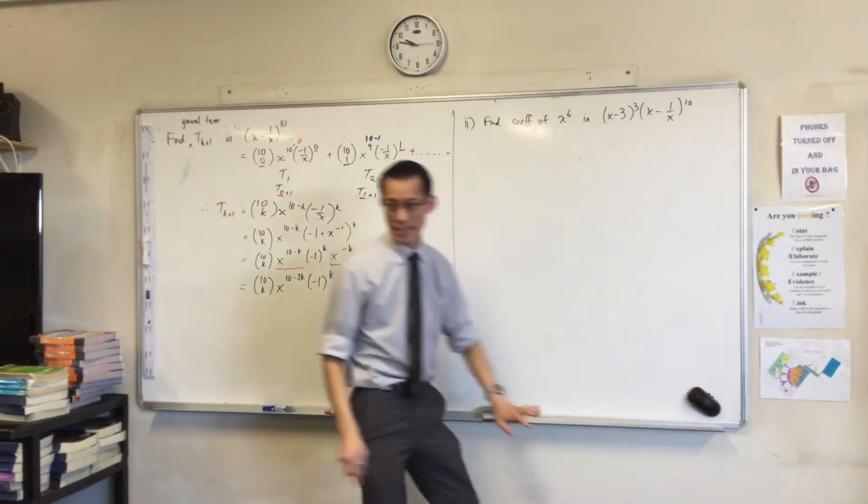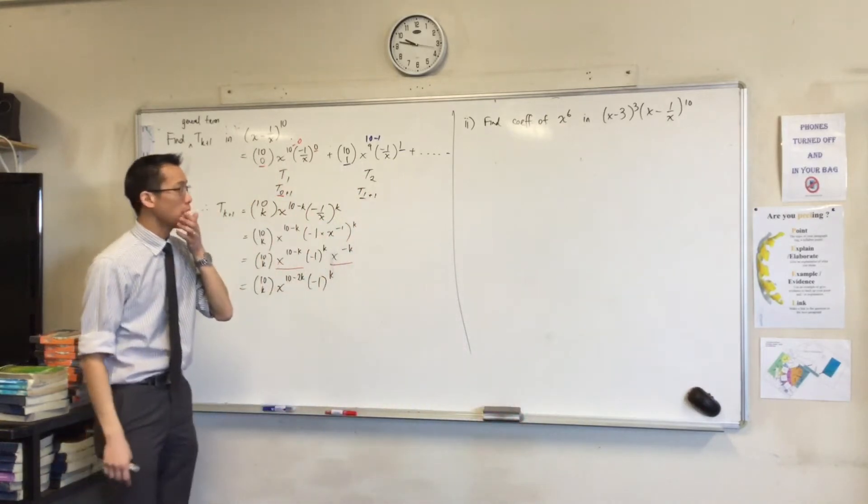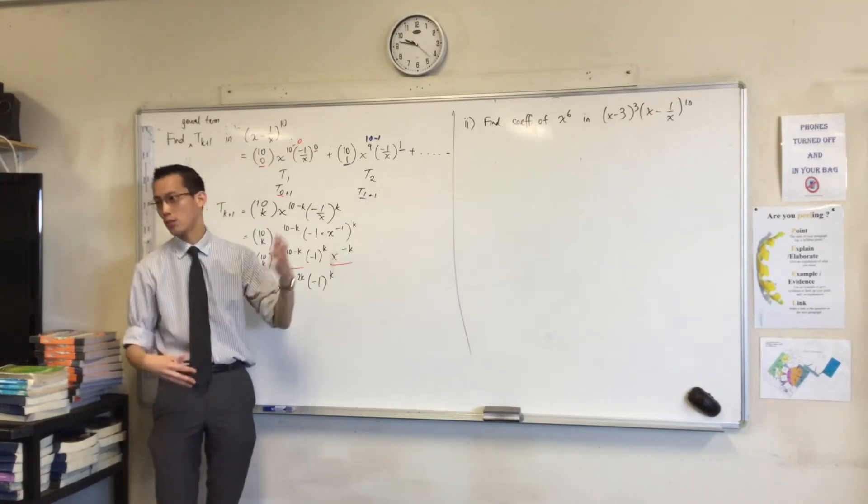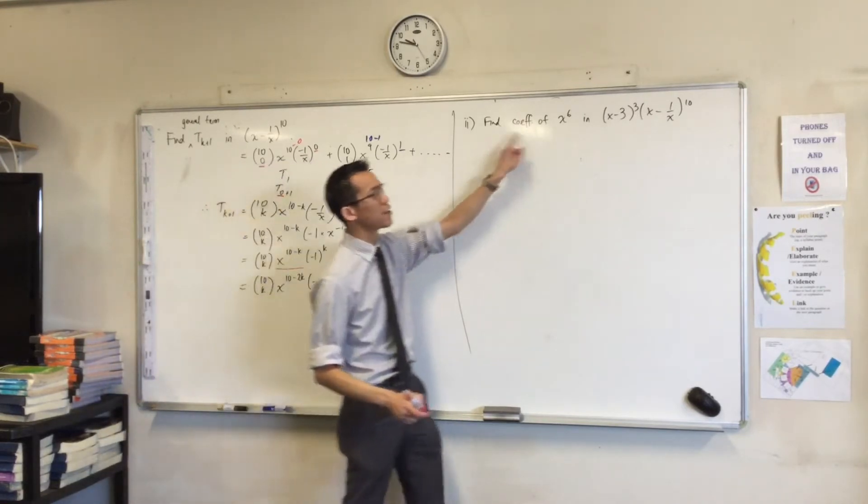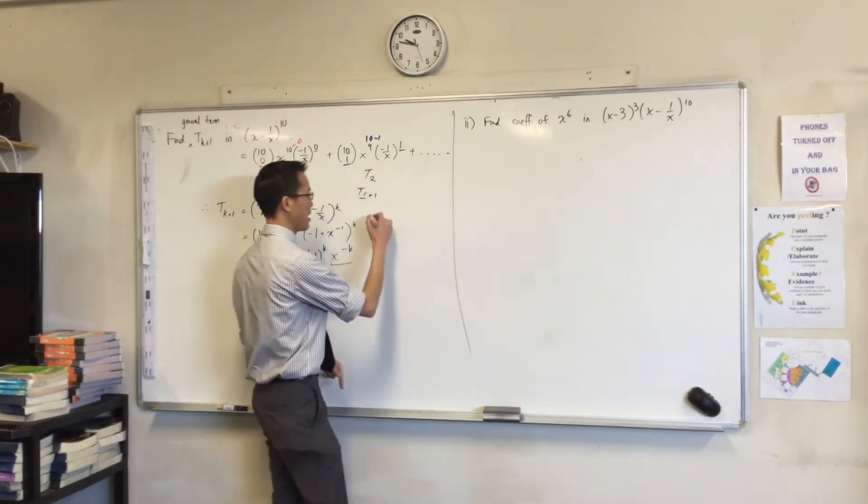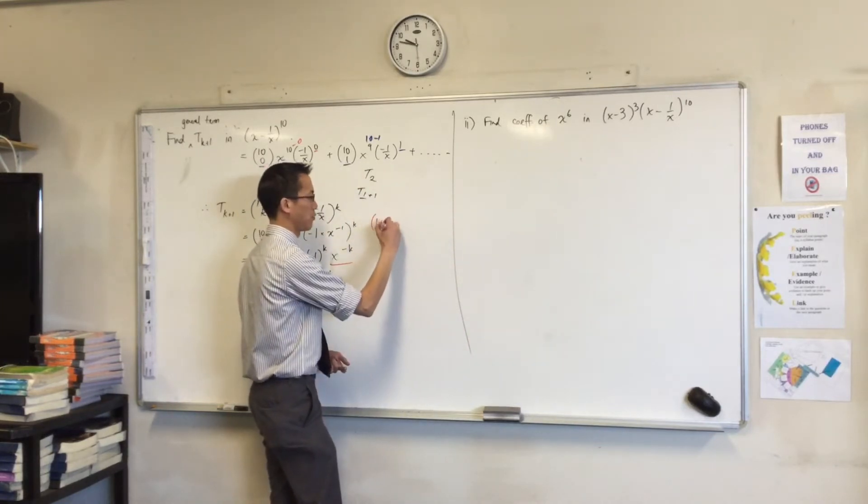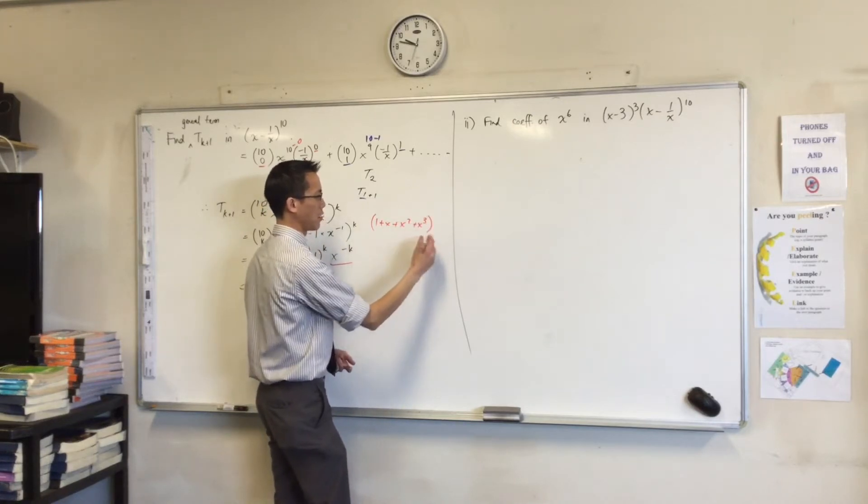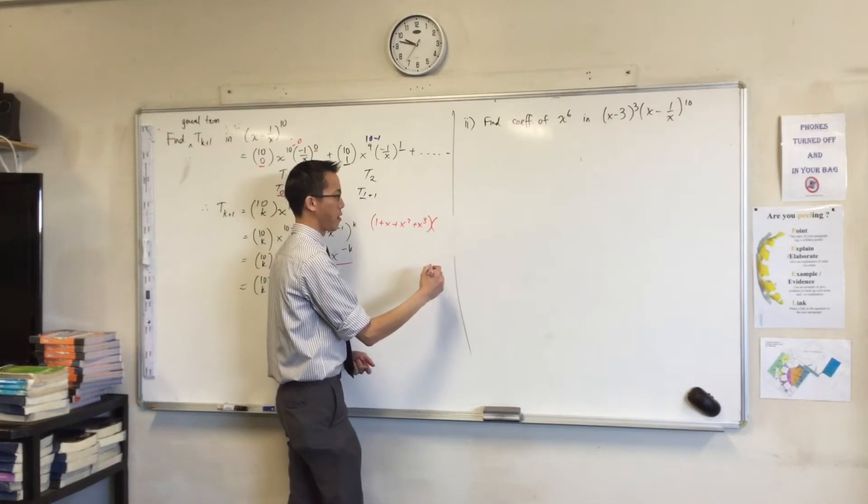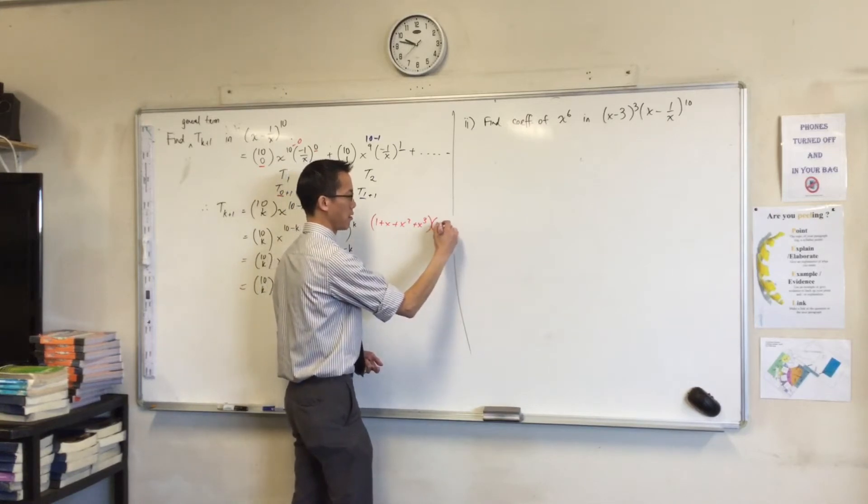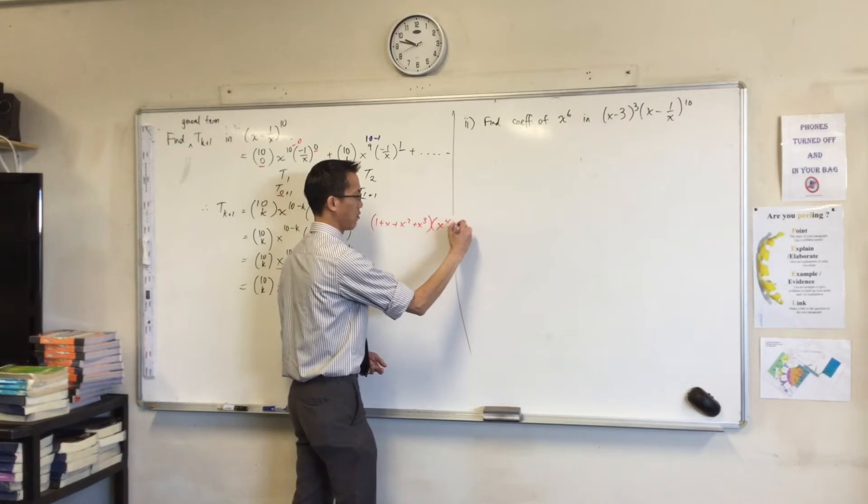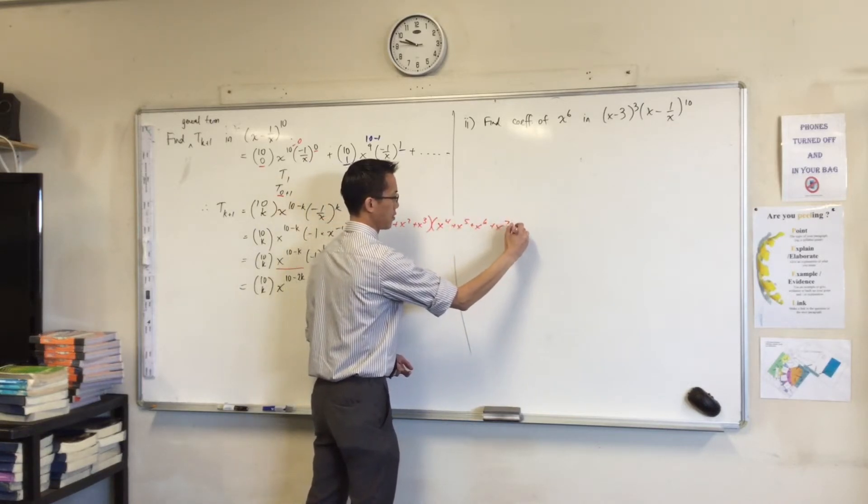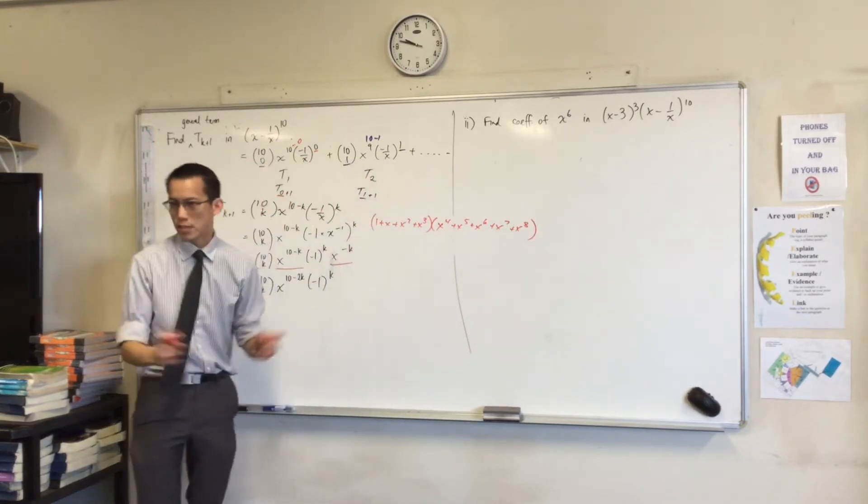So then you have to identify, with a simpler example, it might be a bit easier, which of the combinations will give you an x to the 6. So for example, if I said find the coefficient of x to the 6 in this. I'm just going to give you a simple example. Times x to the 4, x to the 5, x to the 6... Just made this up.